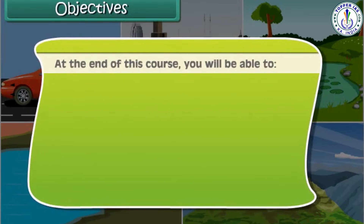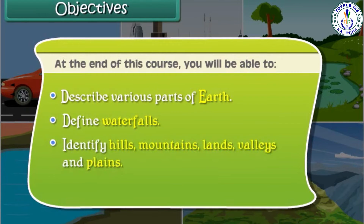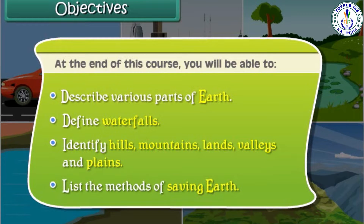At the end of this course, you will be able to describe various parts of Earth, define waterfalls, identify hills, mountains, lands, valleys and plains, and list various methods to save our Earth.